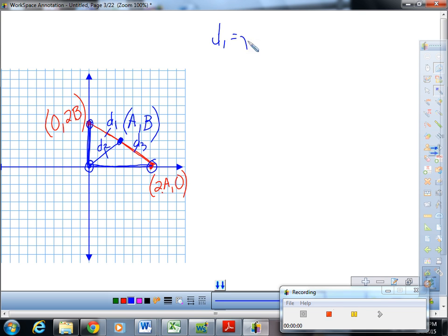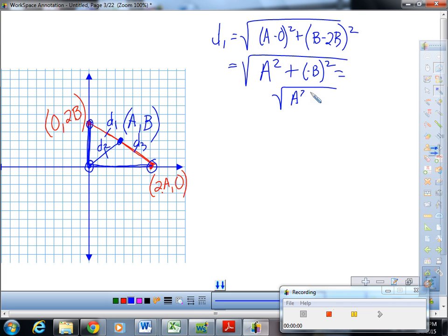Actually, D1 is equal to the square root of, hmm, A minus 0 squared plus B minus 2B squared. I'm writing this one out so you kind of understand it a little better. So, that's the square root of A squared plus negative B squared. And that's how we have to leave it, the square root of A squared plus B squared.